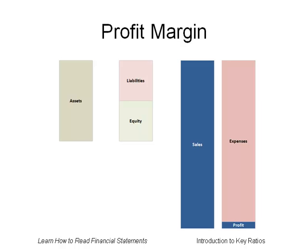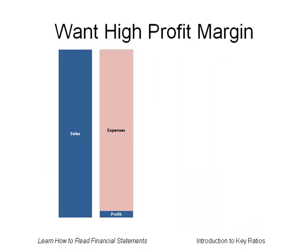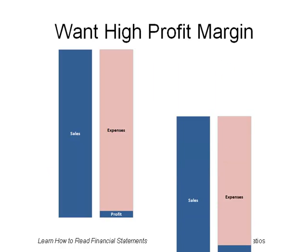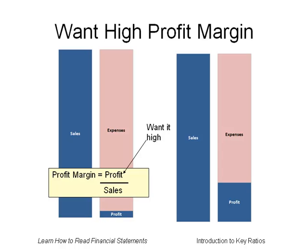Profit margin compares the profits earned from sales. It compares the size of the profit box to the sales box. Profit margin is equal to profit divided by sales. You are striving to earn a high profit margin. Which profit margin would you want — the one on the left or the one on the right? Obviously, you would want to generate more profits from your sales, like the diagram on the right. Therefore, you want the profit — the top part of the fraction — to be big relative to the bottom part of the fraction.